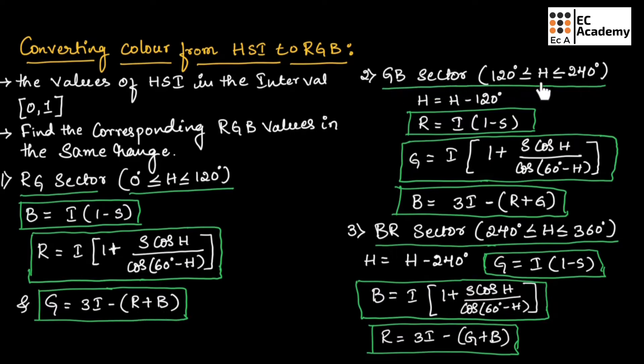In the second sector, where H value is between 120 and 240 degree, in the first step we need to find the new value of H by subtracting 120 degree from H. Then we need to find the value of R as I into 1 minus S. G can be found using I into 1 plus S cos H divided by cos 60 degree minus H, and we can find B by using the equation 3I minus R plus G.